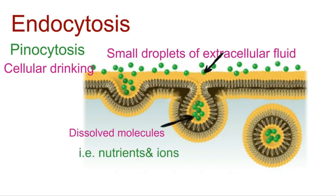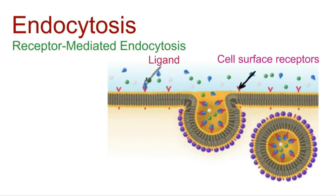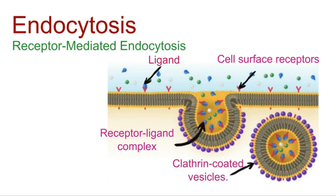The last one is receptor-mediated endocytosis. This process is highly specific. Cell surface receptors bind to specific molecules called ligands, and the receptor-ligand complex is internalized in clathrin-coated vesicles.